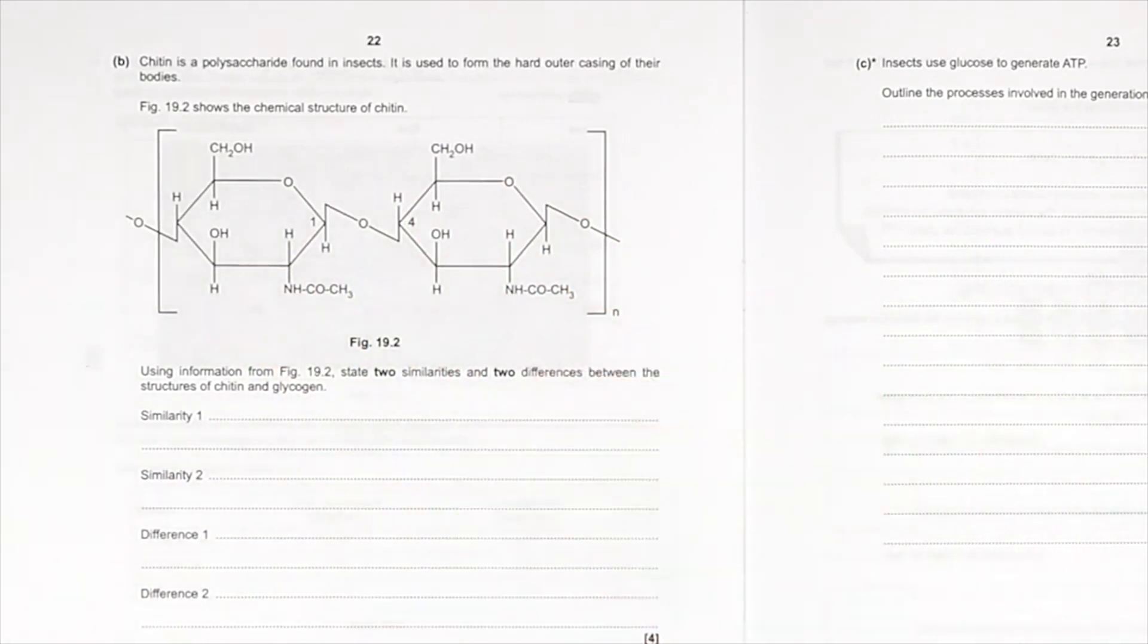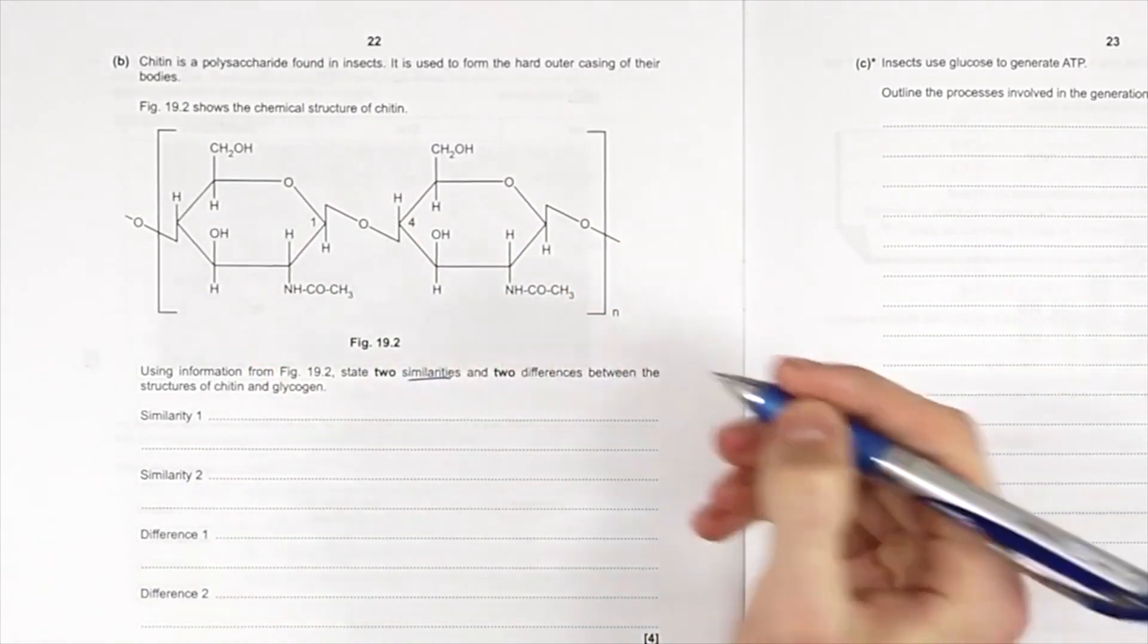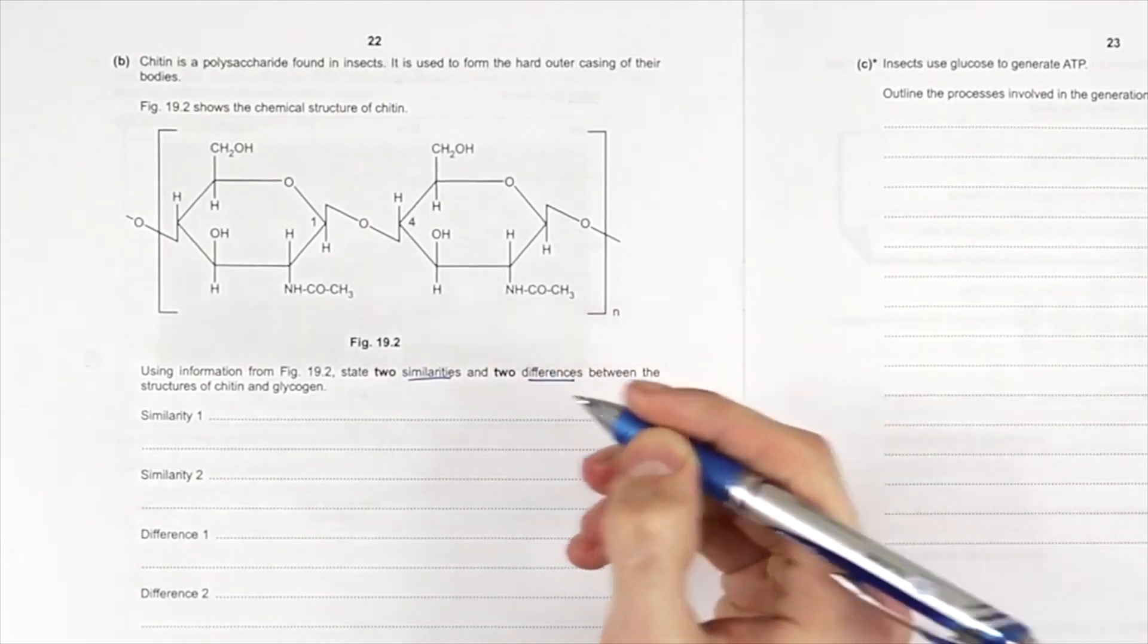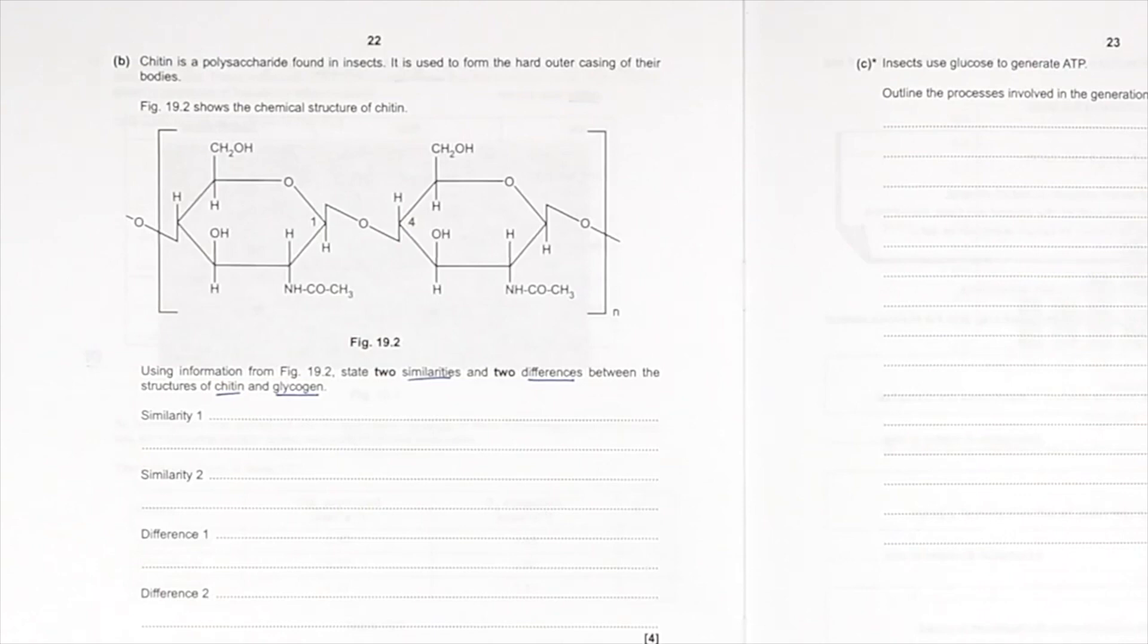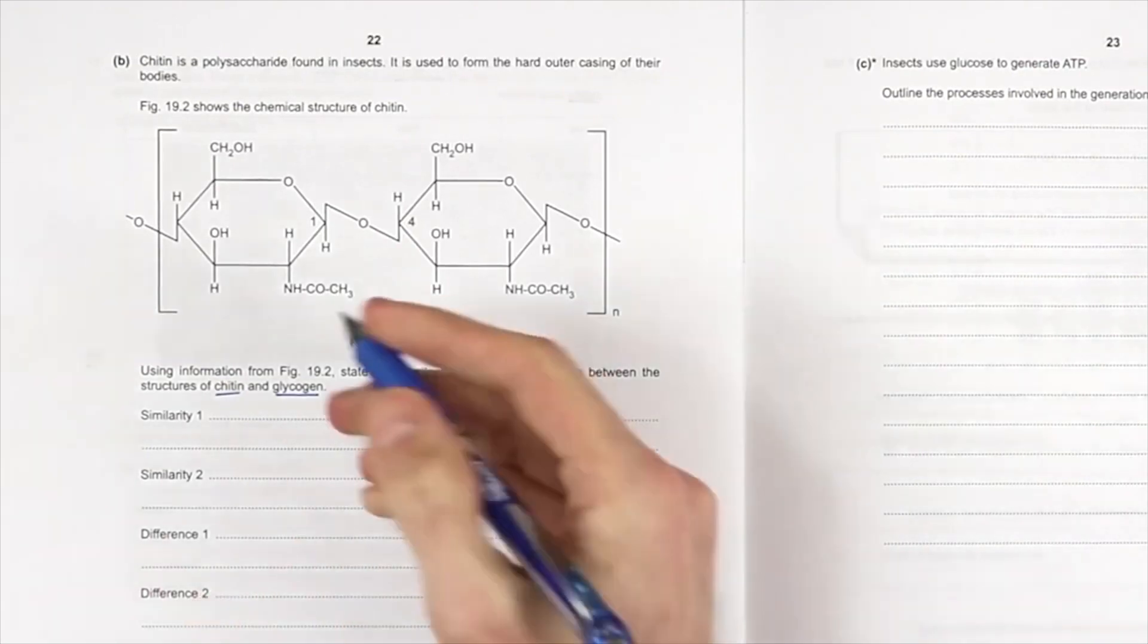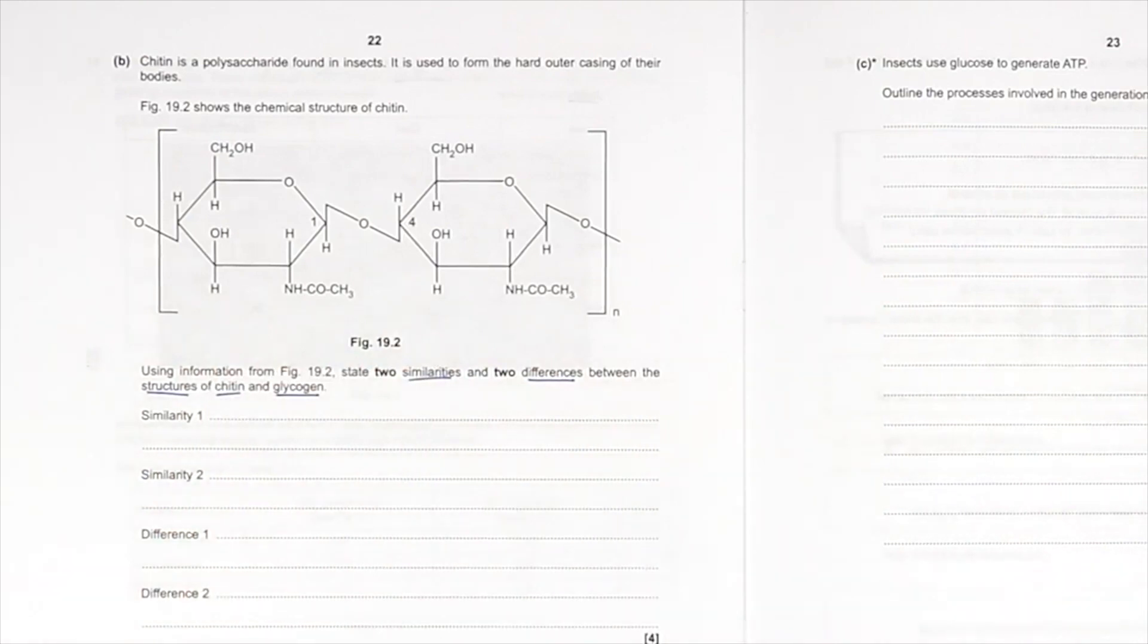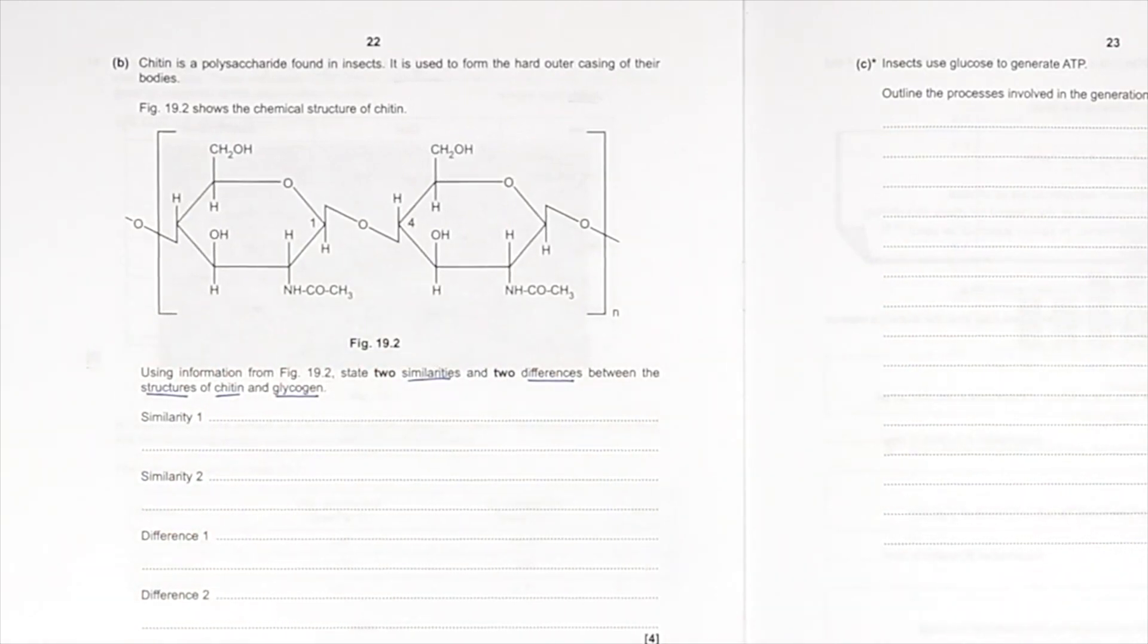Using the information, state two similarities and two differences between the structures of chitin and glycogen. In the structures, we want to give about the structure. Nothing to do with the function, but the structure.